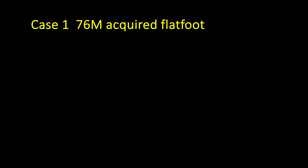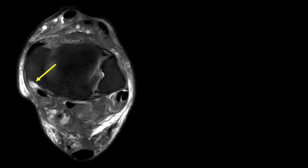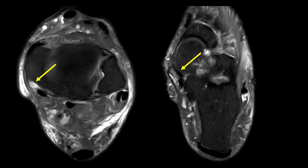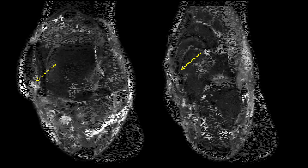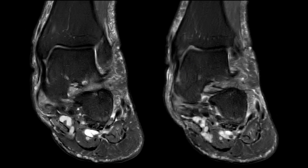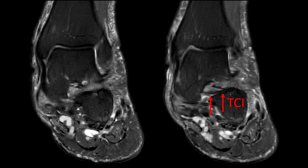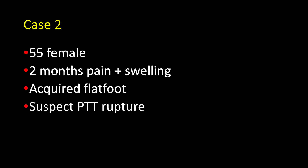The first case I'll demonstrate is a 75-year-old man with acquired flatfoot. There's fluid in an empty posterior tibial tendon sheath, so it's completely torn. In the foot, we see the distal stump of the torn tendon. In the coronal plane, we see the tibial spring ligament, the distal stump of the torn posterior tibial tendon, and we don't see the torn supramedial spring ligament, which should be present where the arrow indicates. Notice that the talocalcaneal interosseous ligament is intact.